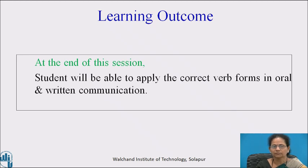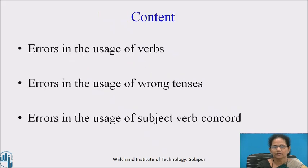Verb plays a vital role in English grammar. It is the most important factor of a sentence. In fact, we cannot complete a sentence without a verb. That's why selecting the proper verb is very necessary in English communication. In this session, today we are going to focus on these points: errors in the usage of verbs, errors in the usage of wrong tenses, and errors in the usage of subject-verb concord.